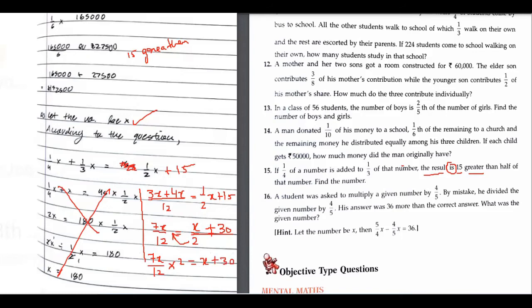Now what I will do is, let me just change the color. Now I am writing the equation over here. So it is 7x upon 6 equals to x plus 30.